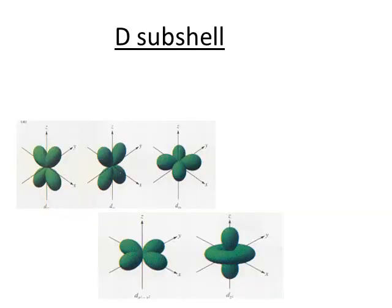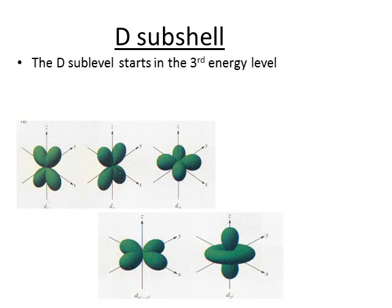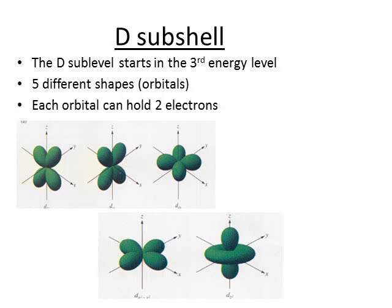As the atoms get bigger, and have more electrons, these are accommodated in the D subshell. You can see that D orbitals have quite different shapes from S and P orbitals. However, they can each hold up to two electrons, making a possible total of 10 electrons in a D subshell. The D subshells begin in the third shell.